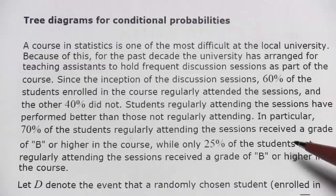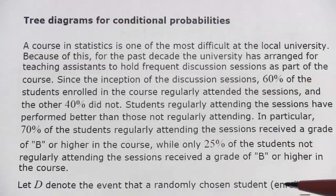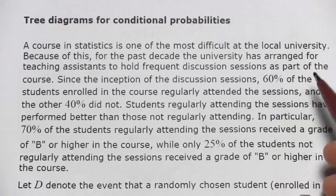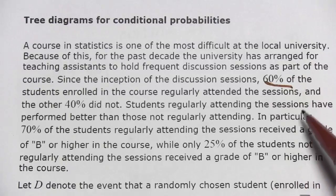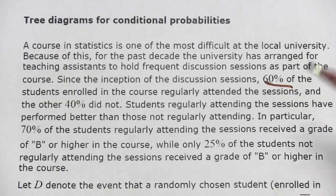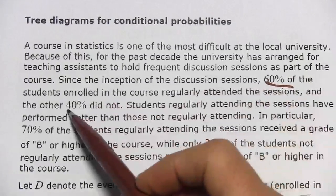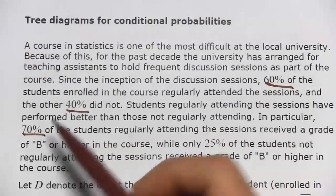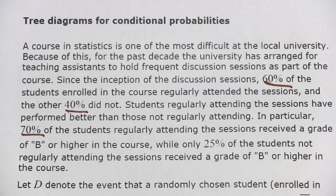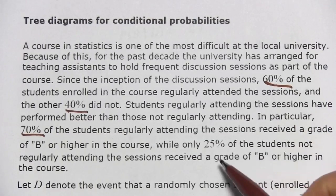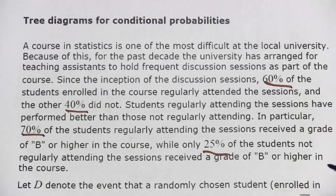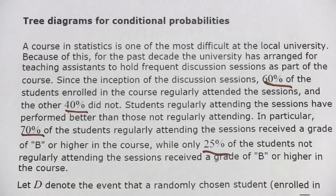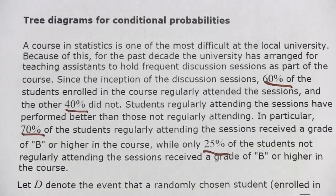To give you the short version, this text describes a situation where there's a class in statistics and 60% of the students go to extra discussion sessions, while 40% don't. The ones who go to the discussion sessions, 70% of them get a grade of B or better, and only 25% of the students who don't go to the sessions get a grade of B or higher. So the discussion sessions seem to help.